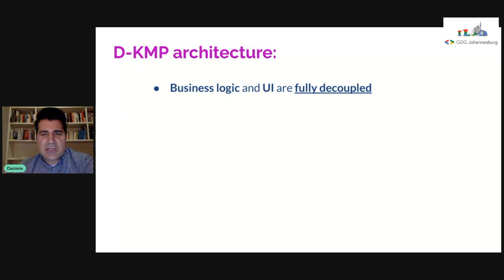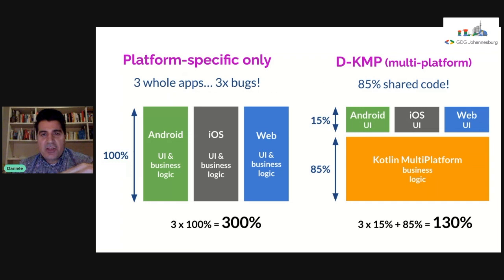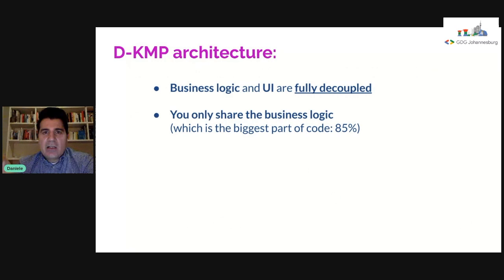Let's see more in detail what the DKMP architecture is about. As you can see from the diagram, there is the declarative UI layer and the business logic, which can be fully decoupled. We only share the business logic — which is the biggest part of the code at 85%. It sounds like a very big number, but hopefully in this talk you'll understand why that 85% is such a high number.